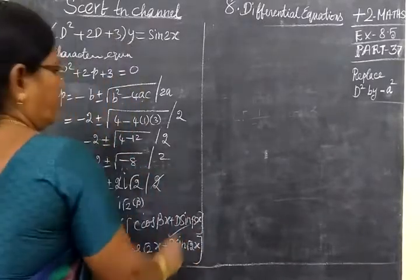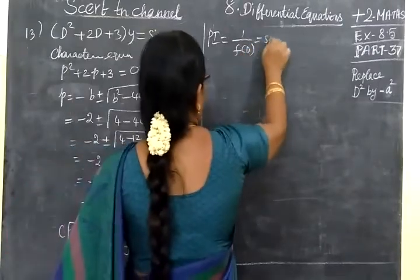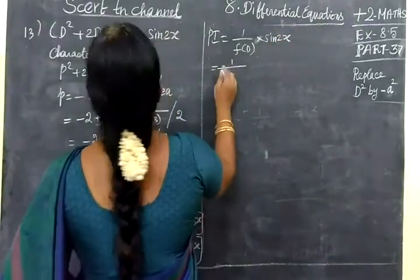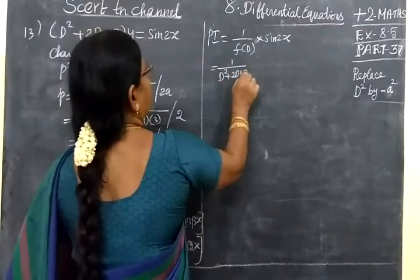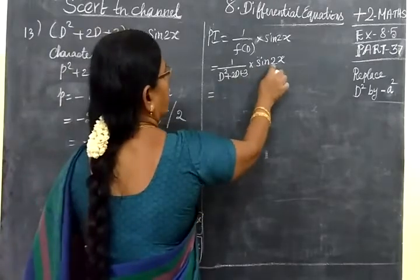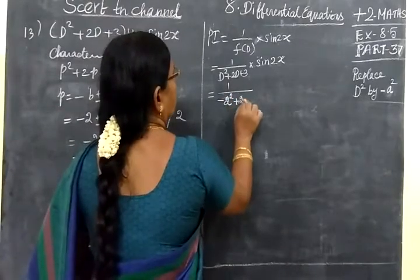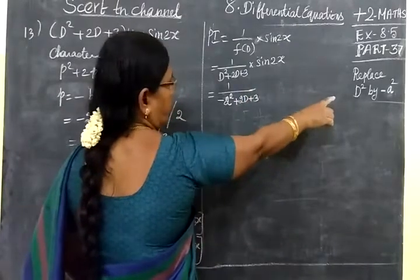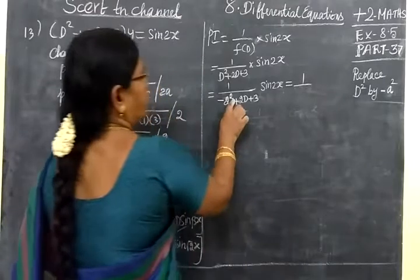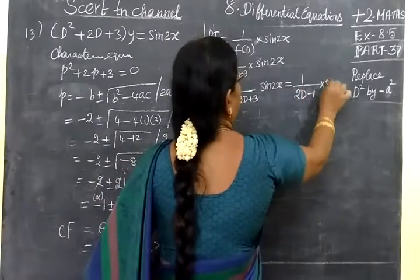Now we write particular integral = 1/F(D) × sin(√2x). So this equals 1 / (D² + 2D + 3) × sin(√2x). Now we have to replace D² by -A². So this is equal to 1 / (-4 + 2D + 3) × sin(√2x). So -4 + 3 = -1. So (2D - 1) × sin(√2x).